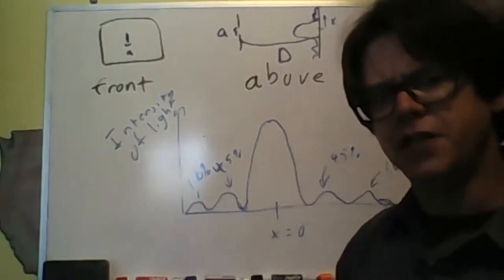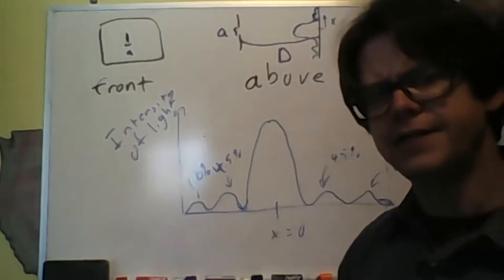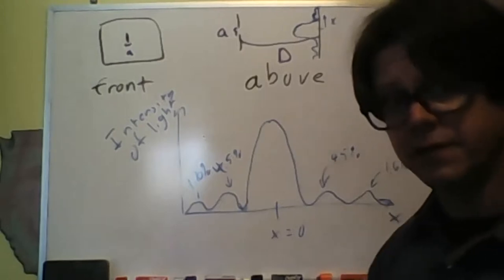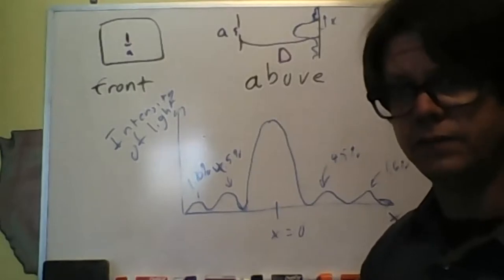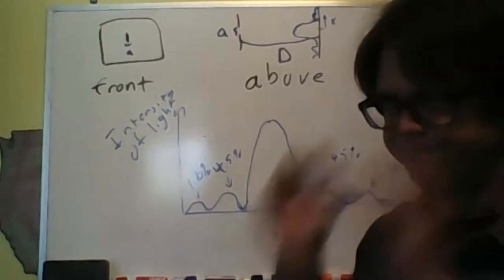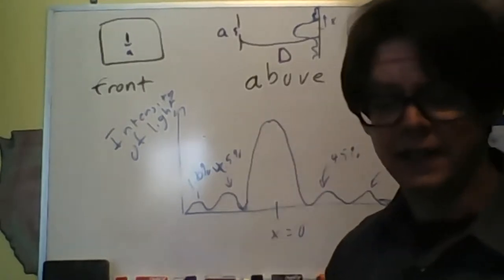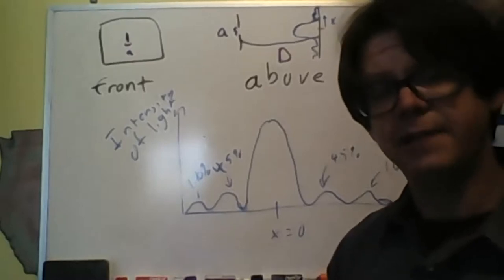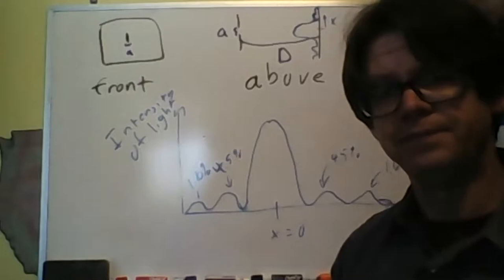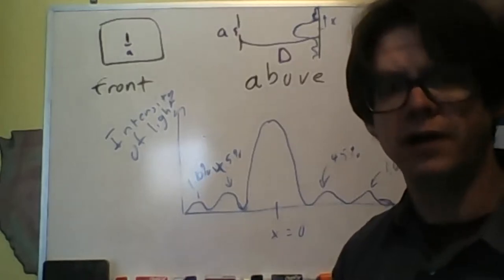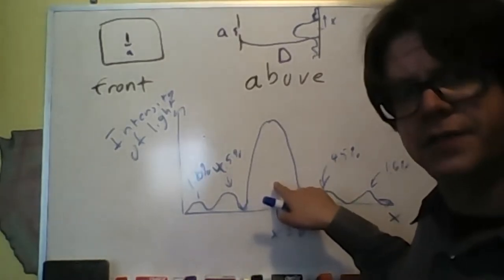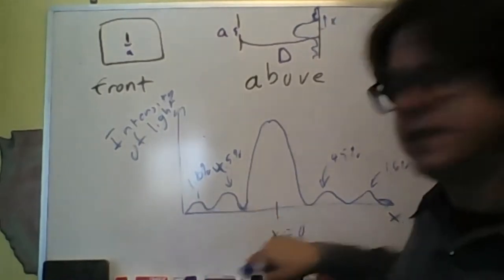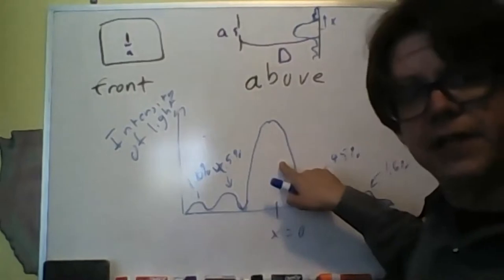The central lobe has almost 90% of the total amount of light in the pattern — that means it has most of the information. Our eyes are basically single slits; they're round, but they behave as single slits. Because the central peak has 90% of the information, it needs to be specially considered as the most important part of the pattern. If this pattern falls on your rods and cones, they're barely going to register the side lobes but will trigger very strongly on the central one.